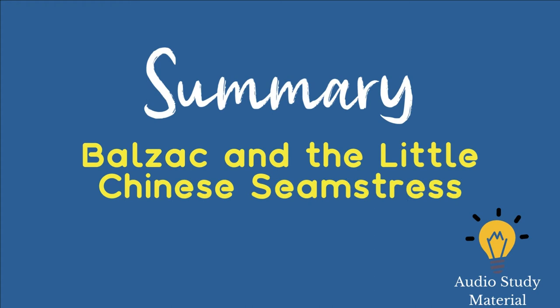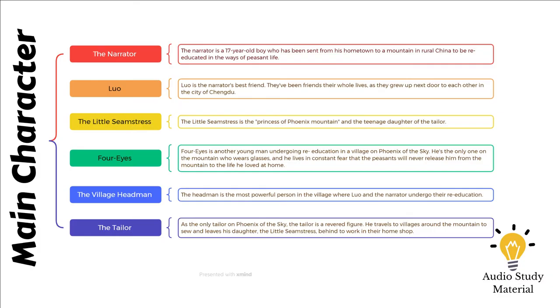Several weeks later, Luo and the narrator visit the tailor's residence to request that the Little Seamstress extend Luo's pants. Luo is obviously attracted to the Little Seamstress, but when questioned by the narrator, he states that the Little Seamstress is insufficiently cultured for him.